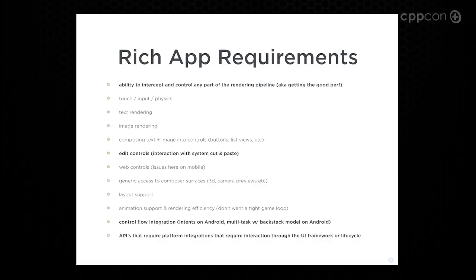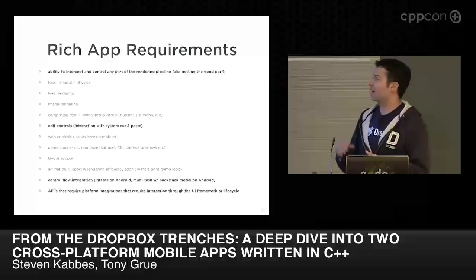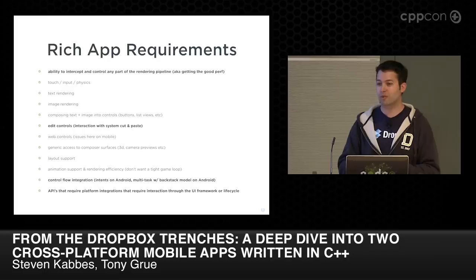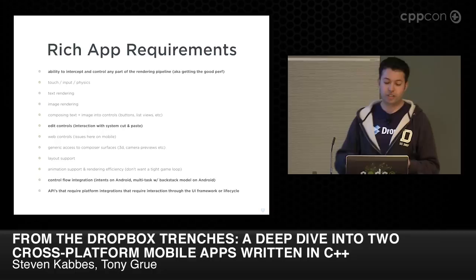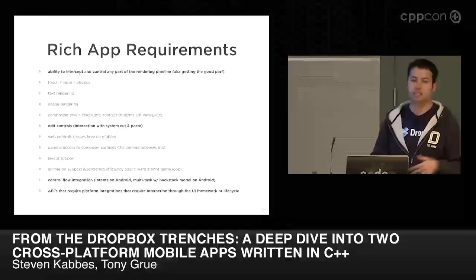Finally, we looked at rolling our own UI framework. But we made a list of requirements needed to build the apps we wanted to build — for Dropbox and apps on the horizon. Some of the most important requirements were being able to plug in the rendering framework at any point, having edit controls that are native. Edit controls, if you've ever worked on one, are some of the most complicated controls in any user interface. Any time cut and paste doesn't work correctly, especially on a mobile platform where typing is a pain, it can be a big problem. And then a really big one is integrating with the OS's control flow — on Android you have an activity and intent model, on iOS you've got the app delegate. We really wanted to be true to the platform so our app doesn't feel out of place.